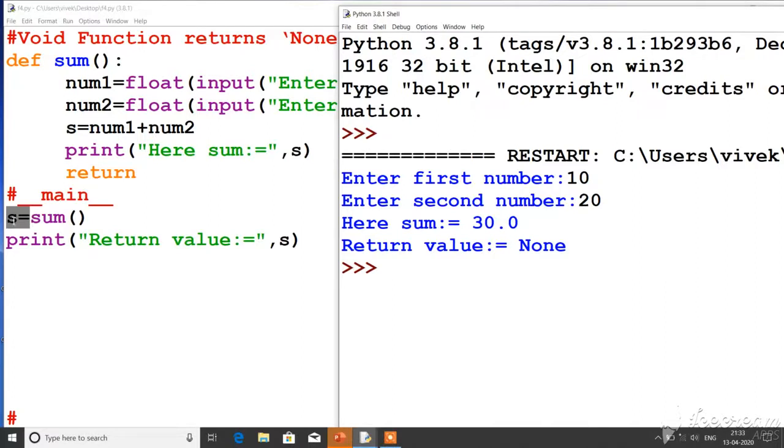Yaha par print ho chuka function definition me aur jab isse return kiya to return hone ke baad jo s ke andar aaya wo kya tha, wo aapne yaha print karke dekha. This statement ne aapko bata diya ke s ne jo return kiya hai wo None return kiya hai.